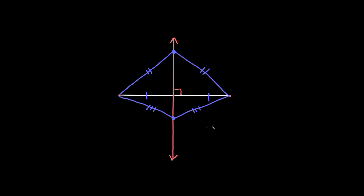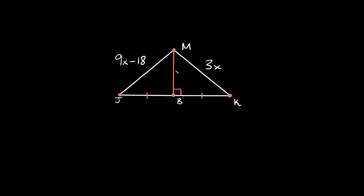Alright, let's try a quick example. Here we have what looks to be a triangle, but really we have a perpendicular bisector splitting the bottom line JBK in half. So segment MB is the perpendicular bisector, which means point M up here is the same distance to J and also the same distance to K. This side is labeled 9x minus 18 and this one is 3x, so we can set these two sides equal to each other: 9x minus 18 equals 3x.